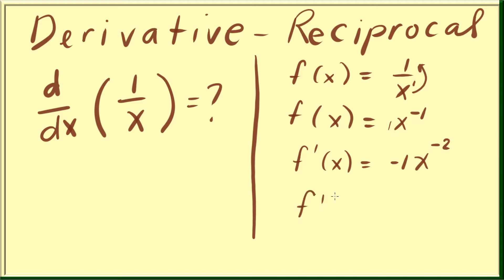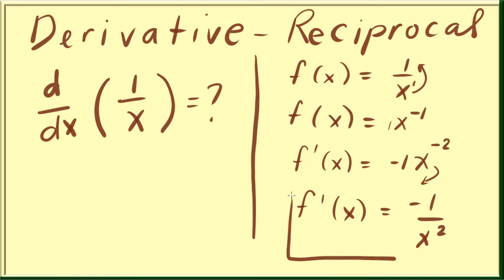Then we express this with a positive exponent. So we say negative 1 over x squared. This is the derivative of 1 over x.